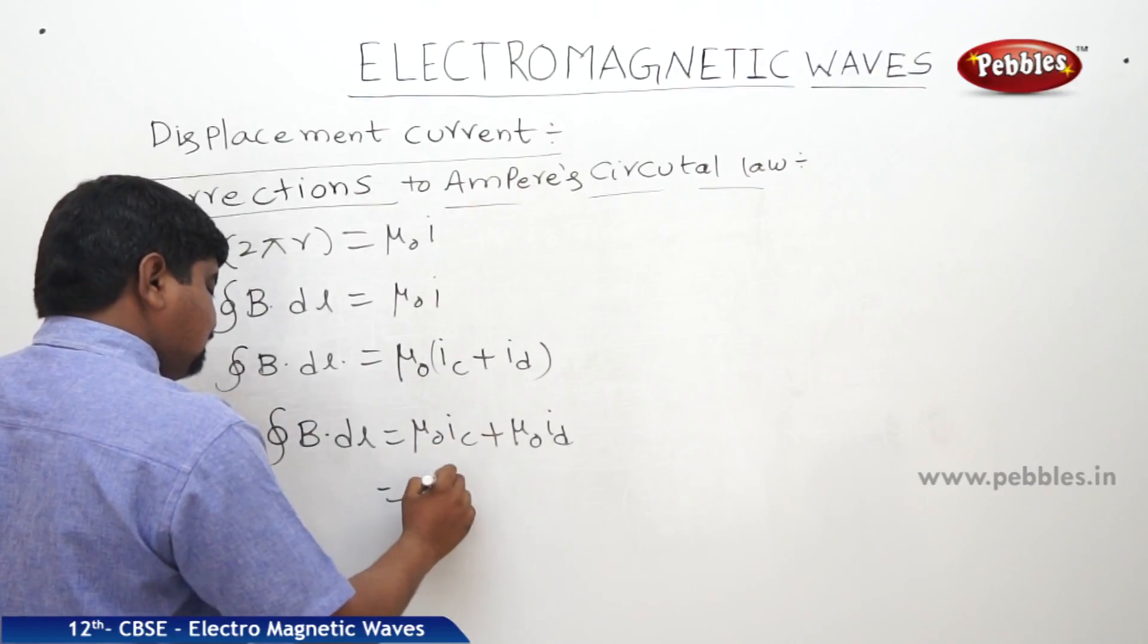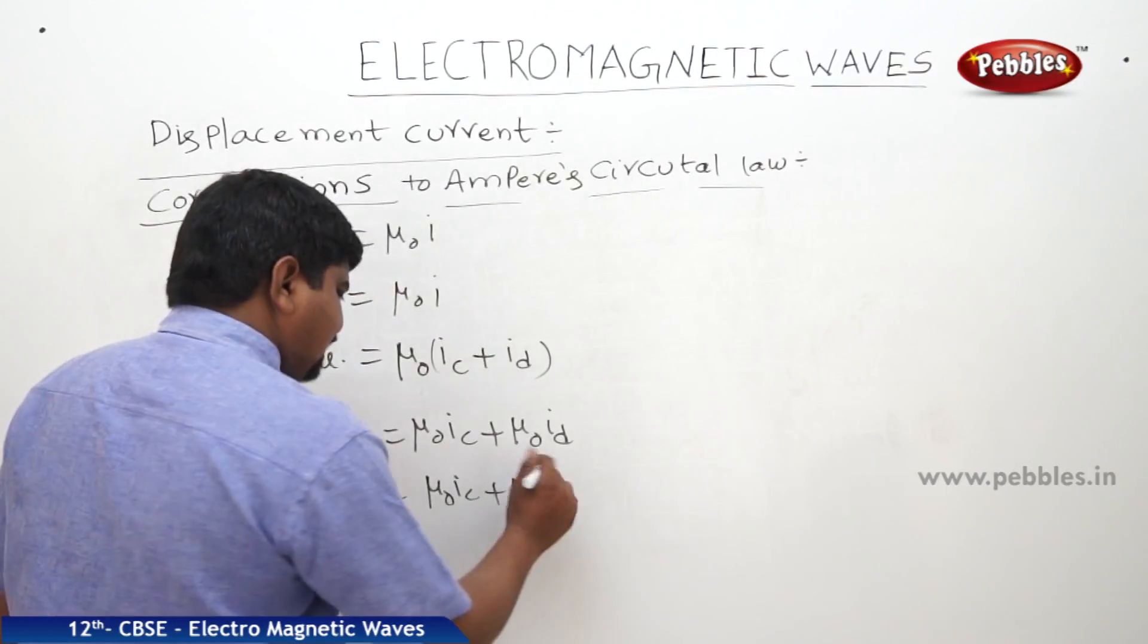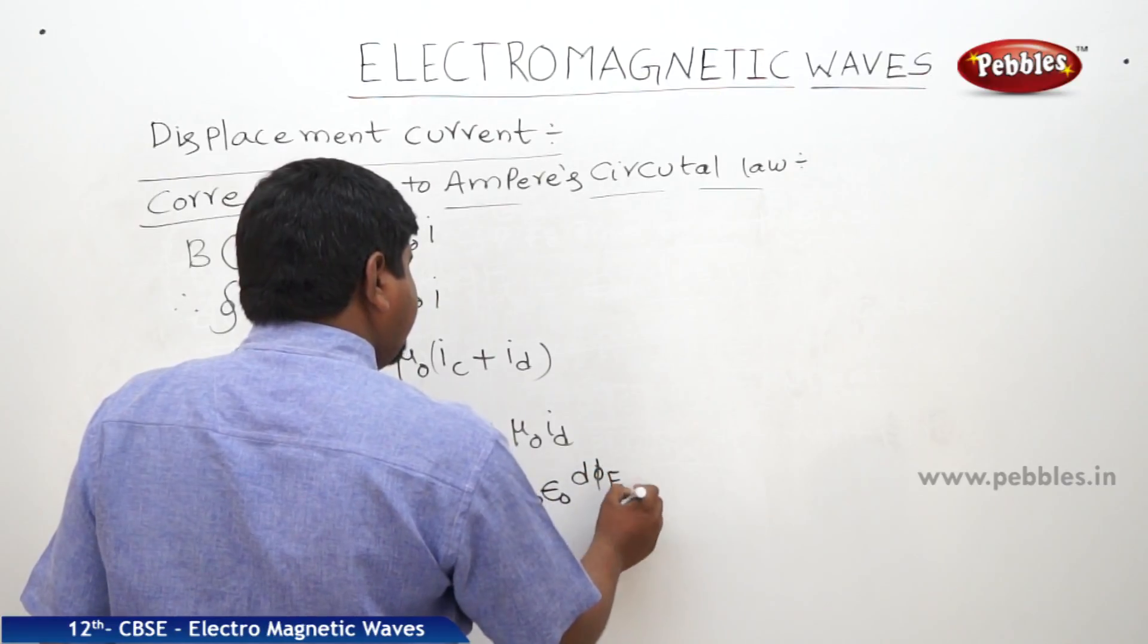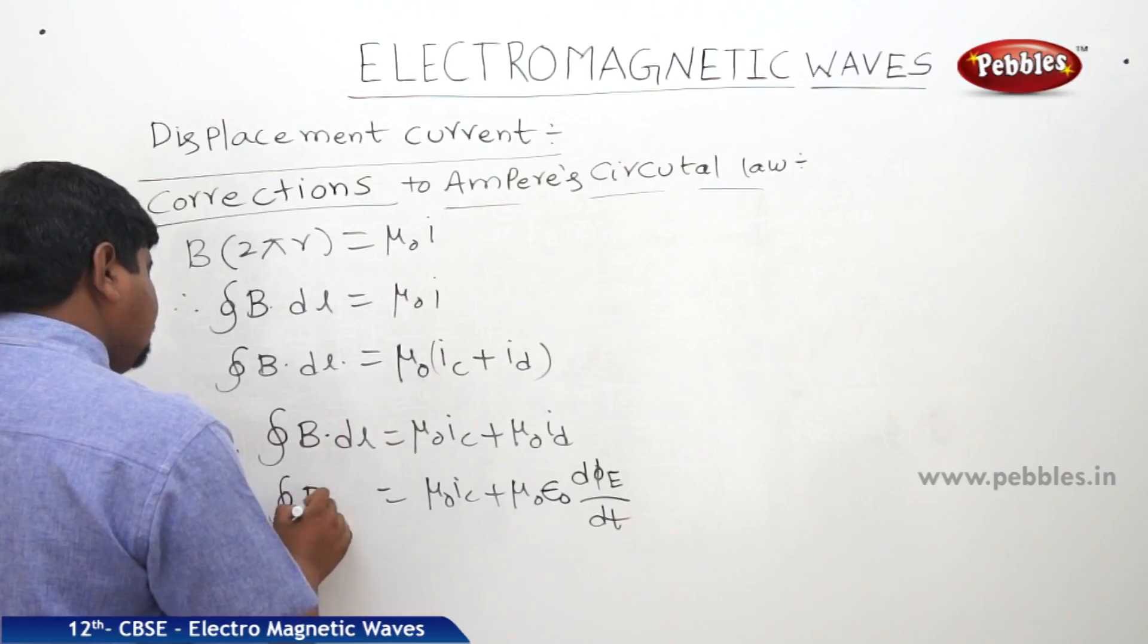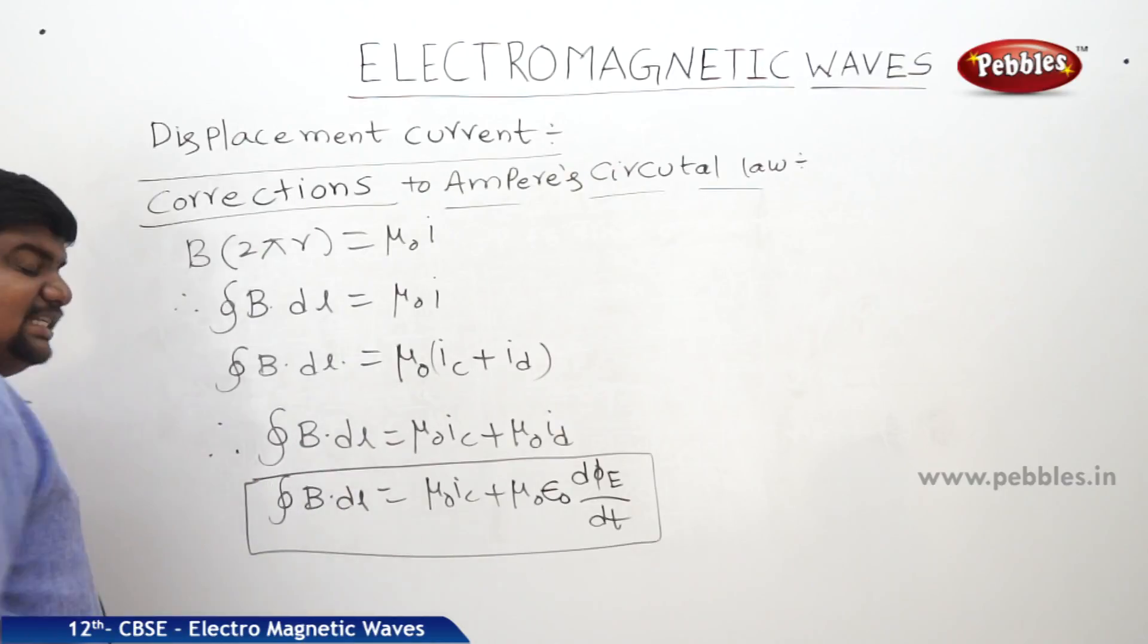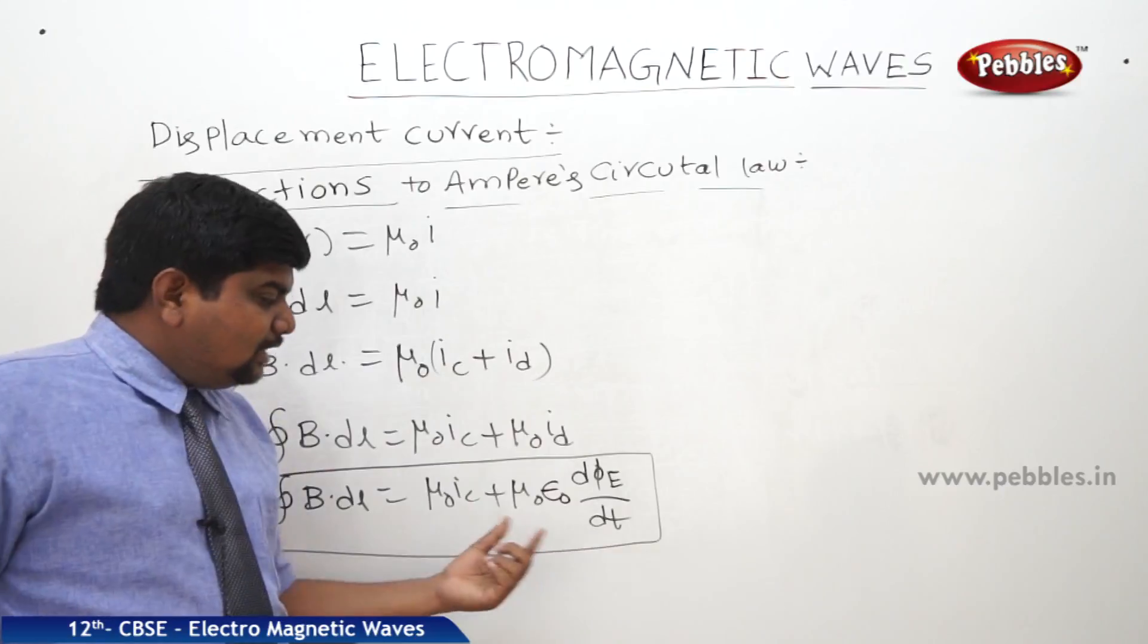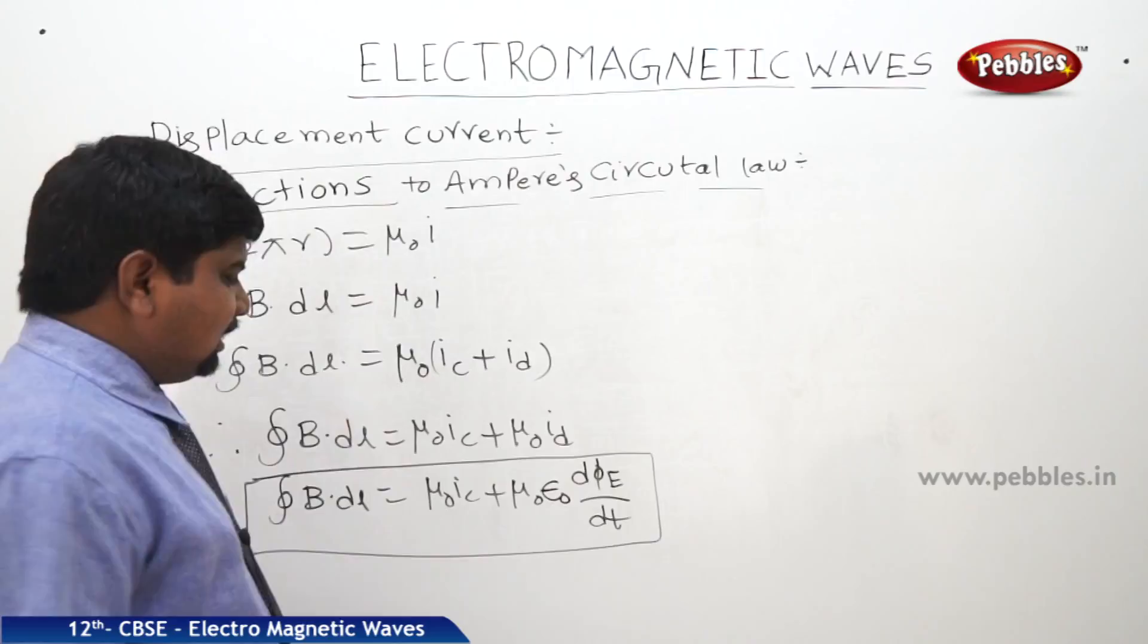Therefore, it is mu naught IC plus mu naught, what is ID? Epsilon naught into d phi E by dt is equal to integral B dot DL. So, this is the expression for Ampere's Maxwell law and nothing but the correction of the Ampere's law with the help of displacement current.